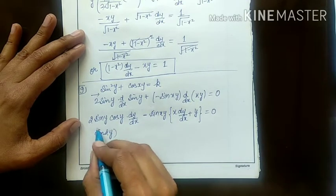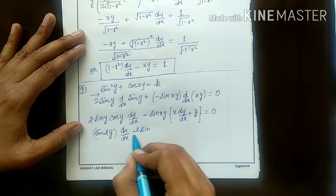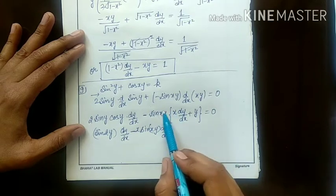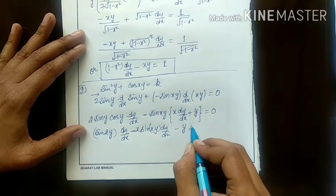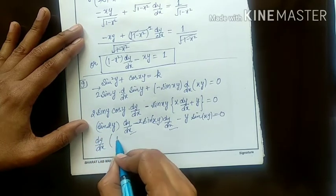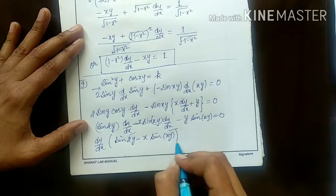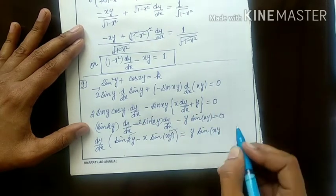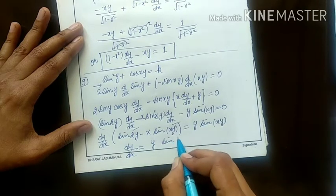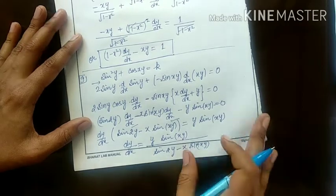This is sine 2y into dy by dx, and minus x sine of xy into dy by dx. First multiply it out; next this is minus y into sine of xy equals 0. Now take dy by dx common: sine 2y minus x sine of xy equals the right side, which is y sine xy. So dy by dx is y sine of xy upon sine 2y minus x sine xy. But we have to evaluate this at the given point.